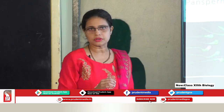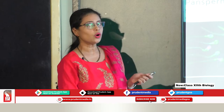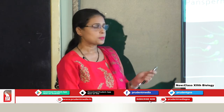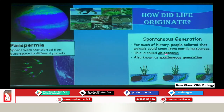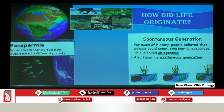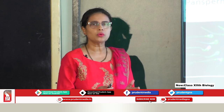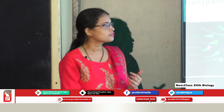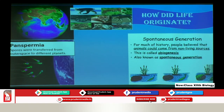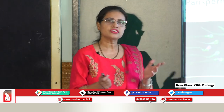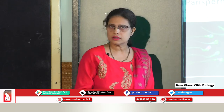The next theory is Spontaneous Generation — also called Abiogenesis. It says that life came into existence from non-living matter all of a sudden, especially from rotten food or decaying leaves. There was no proof for this; in fact, there was evidence to discard this theory, given by Louis Pasteur.